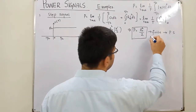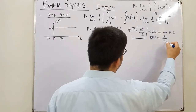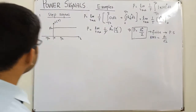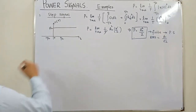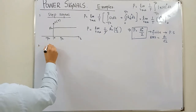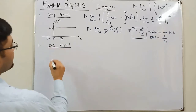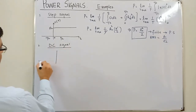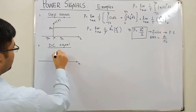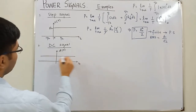You can write the RMS value which is a₀ upon root 2. That is about the step signal. In the next example I told you about a DC signal. So the second example is the DC signal, where x(t) = a₀.